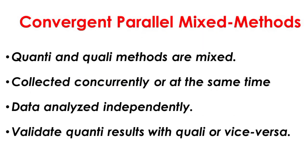In the convergent parallel mixed methods design, quantitative and qualitative methods are mixed to obtain the results. First, two types of data are collected concurrently or at the same time. Then, data are analyzed independently using quantitative and qualitative approaches. The integration of quantitative and qualitative methods will help the researcher get a complete picture of the issue being explored and to validate one set of findings with the other.